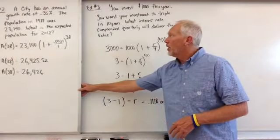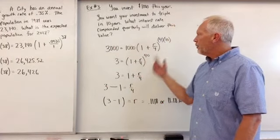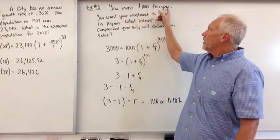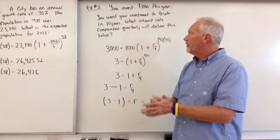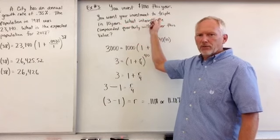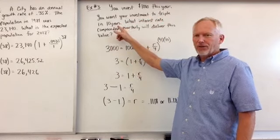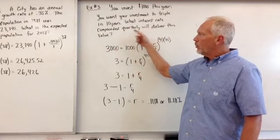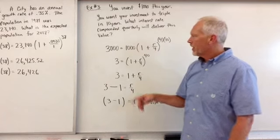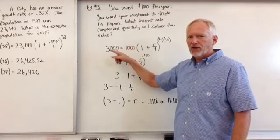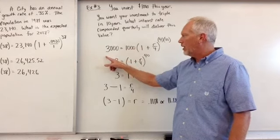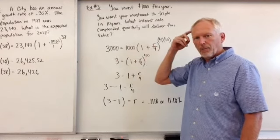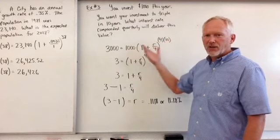Finally, example number three I have for you is maybe we have to solve for an R value, some interest rate. So what we have is you invest one thousand dollars this year. So you just put a thousand bucks into your account. You want your investment to triple. I want my investment to triple over the next ten years. What type of interest rate, if it's compounded quarterly, would I want? What interest rate will deliver the amount that's triple? So I currently have a thousand triple. The amount is three. That's the expected amount that I want. Times one plus R, our variable R, divided by four because we're compounding quarterly, is four times ten. I want it in ten years.